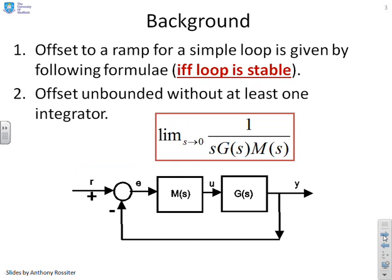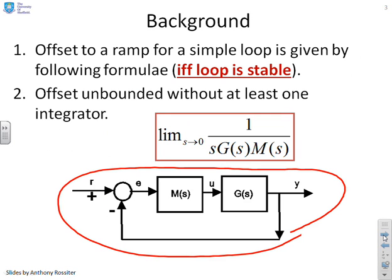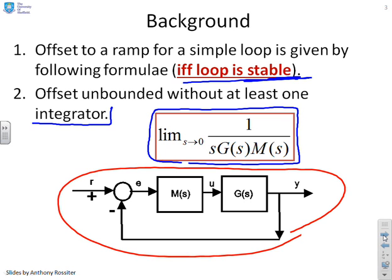Some background. First of all, we're going to assume a simple loop as with the other examples in this series like this below, and remind you that you can only talk about offset if this loop is stable. However, for this tutorial, we will make sure all the examples are stable, but that's a test you need to do. Now, given it's stable, the offset to a ramp is given by this formula here, which was derived earlier. The limit as s goes to 0 of 1 over s G(s) M(s). And a reminder, if G and M between them do not include at least one integrator, then the offset is unbounded.